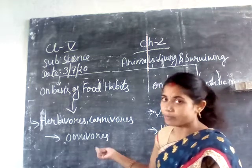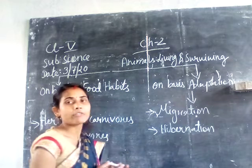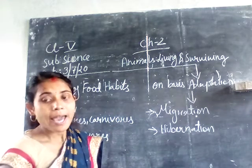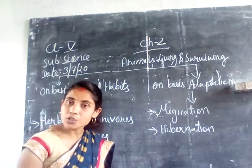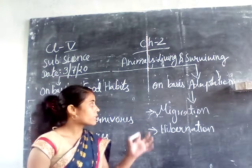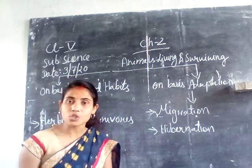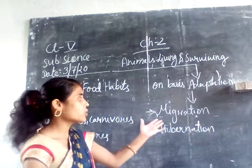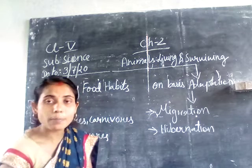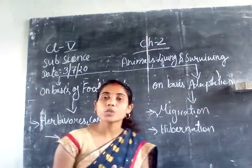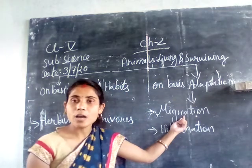Omnivorous animals are both plant eaters as well as flesh eaters — that is your omnivorous animals. Now, on the basis of adaptation habits, there are two terms: hibernation and migration. Migration is the movement of animals from one place to another in search of food or in order to escape from harsh climate.